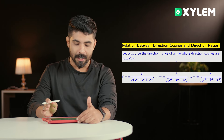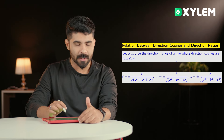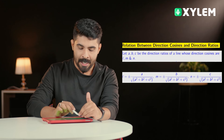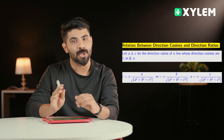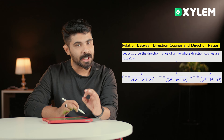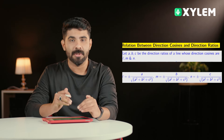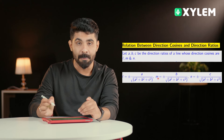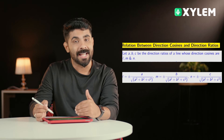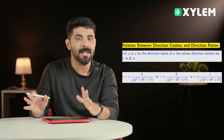Now the relation between direction cosines and direction ratios. If A, B, C are the direction ratios of a line, then L = A divided by √(A² + B² + C²), M = B divided by √(A² + B² + C²), and N = C divided by √(A² + B² + C²).